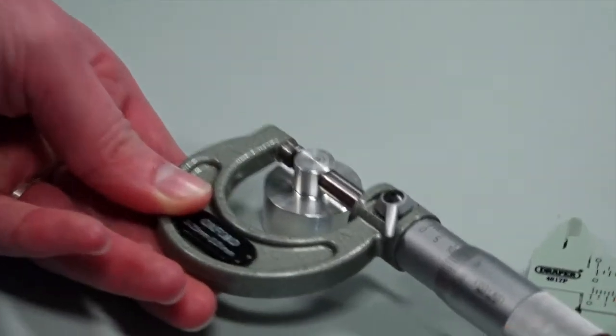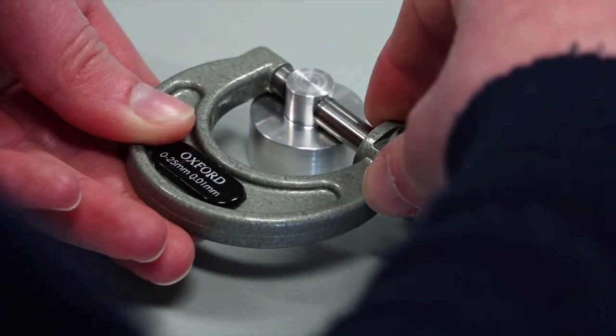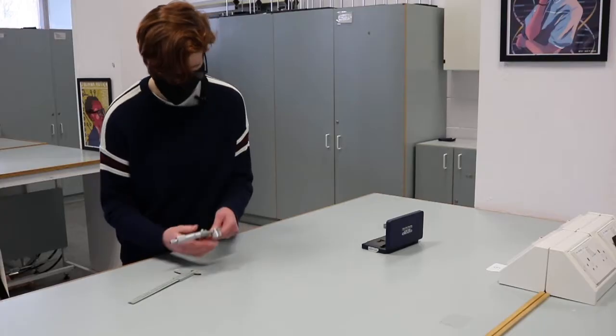Place the object to be measured in between the two faces of the screw gauge. The thimble is the rotating part. Twist this until the two faces are almost holding the object in place.